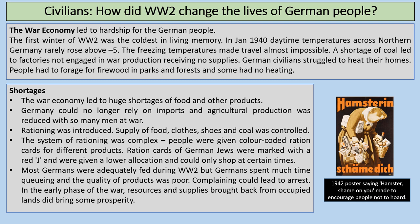Germany, being at war, could no longer allow imports and agricultural production was reduced with so many men at war. Rationing was introduced and the supply of food, clothes, shoes and coal was controlled. The system of rationing in Germany was quite complex. People were given colour-coded ration cards for different products. Ration cards of German-Jewish people were marked with a red J and given a lower allocation — they could only shop at certain times. Most Germans were adequately fed during World War II, at least in the early years, but spent much time queuing and the quality of products was really poor.